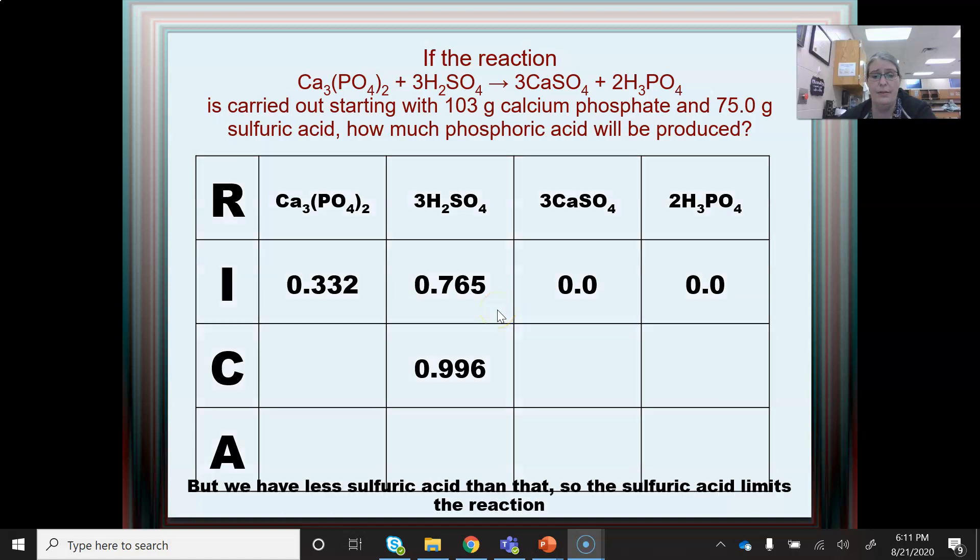We are only going to be able to use up 0.765 because that's all we have. So the sulfuric acid, even though it's the larger number of moles, actually is the limiting reactant in this problem. We can't use this number to do our problem because it will assume that we make too much product. We will not be able to make all of the calcium phosphate into calcium sulfate. So now we have to say, now that I've found my limiting reactant, how much calcium phosphate will we use when we run out of the sulfuric acid?